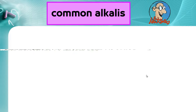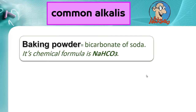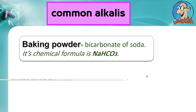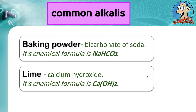Number 7: Common alkalis. Baking powder — bicarbonate of soda — its chemical formula is NaHCO3. Lime — calcium hydroxide — its chemical formula is Ca(OH)2.